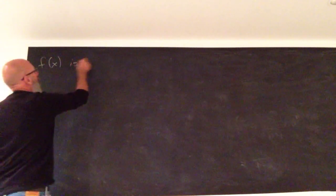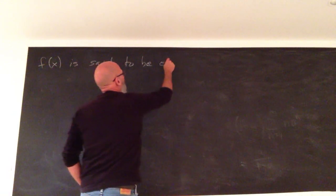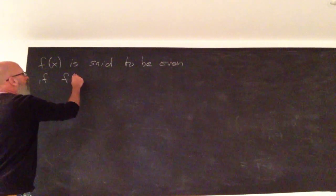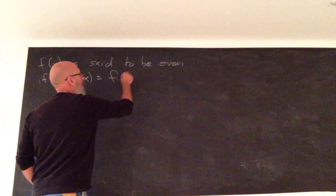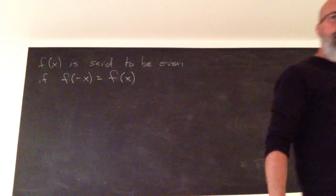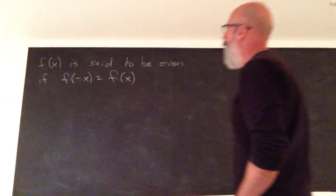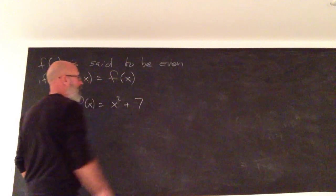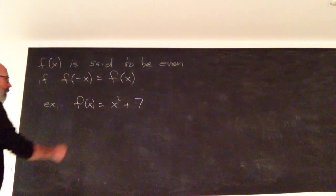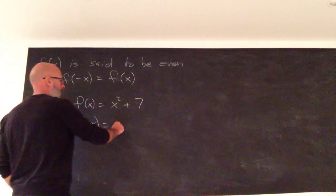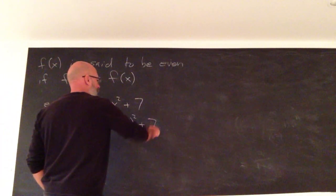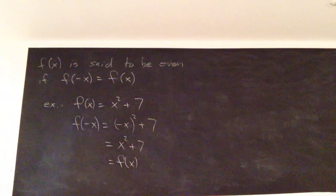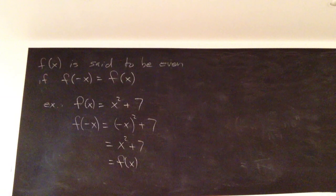A function f(x) is said to be even if f(-x) equals f(x). We have obvious examples. For instance, f(x) = x² + 7 is even because f(-x) = (-x)² + 7, which is really x² + 7, which is your original function. We've seen this before, we won't dwell on this.